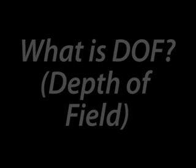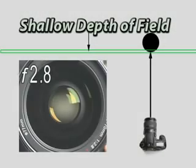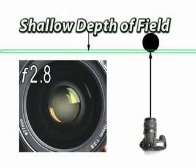The third rule has to do with something called depth of field. A depth of field is a wall of focus — that's probably the best way to think of it. It's a wall of focus which runs parallel to the camera sensor.